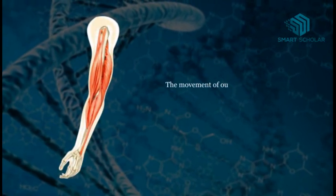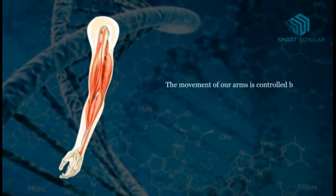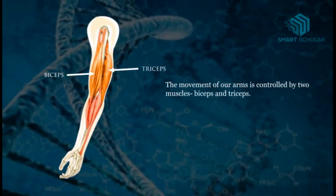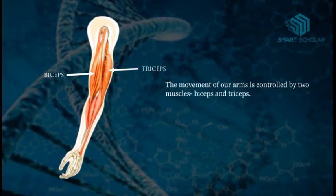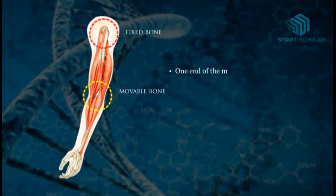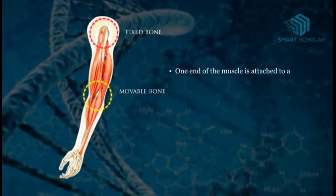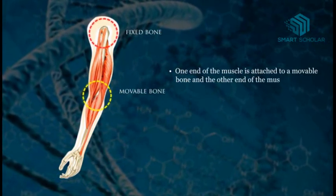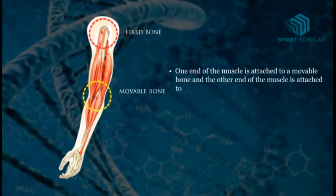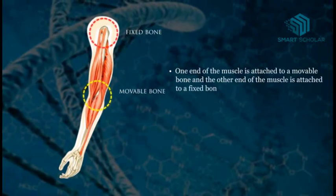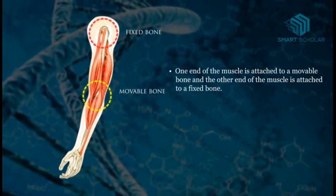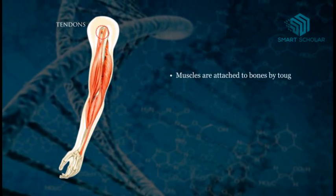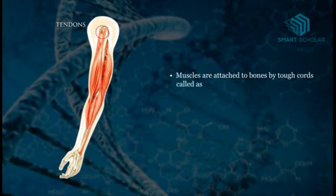The movement of our arms is controlled by two muscles: biceps and triceps. One end of the muscle is attached to a movable bone and the other end of the muscle is attached to a fixed bone. Muscles are attached to the bone by tough cords called tendons.